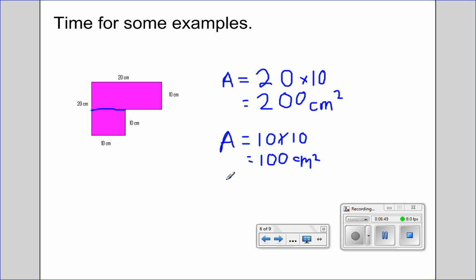And like we said a couple of slides ago, to find the total area, I need to add the area of each piece. So that's 200 plus 100 for a grand total of 300 centimeters squared.